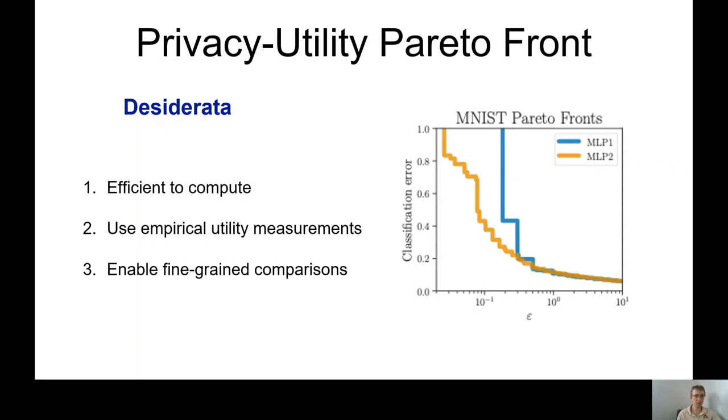So for example, when you have a choice of two architectures of a neural network that you would like to use in a given problem, you'd like to have such plots to understand which architecture gives you a better privacy utility trade-off.